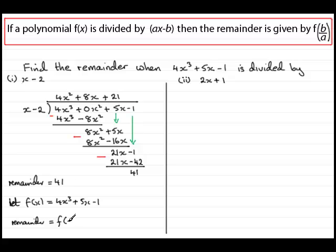So the remainder is equal to f(2), according to the remainder theorem. And that would mean that we substitute 2 for x in here. So we'll get 4 times 2³ + 5 times 2 - 1. And what does this come to? Well, 2³ is 8, 4 eights are 32, plus 5 twos are 10, that's now 42, take away 1, 41. Our remainder here.